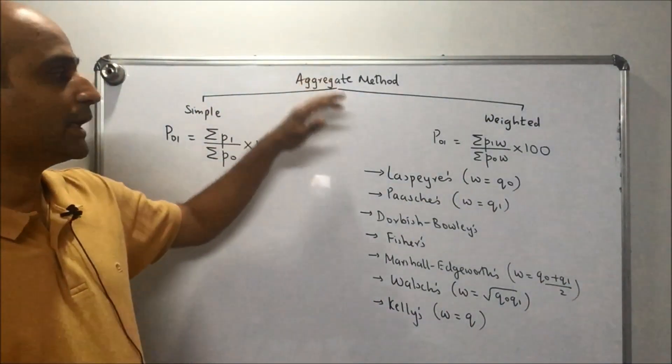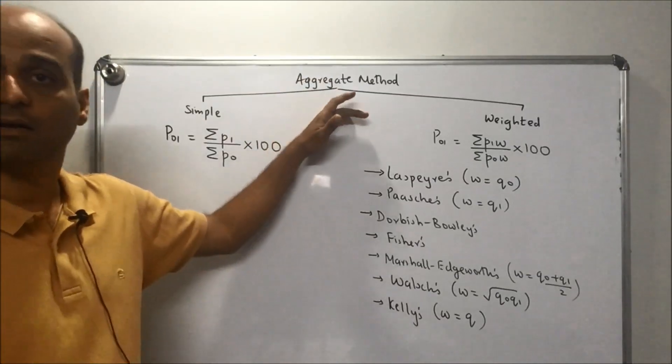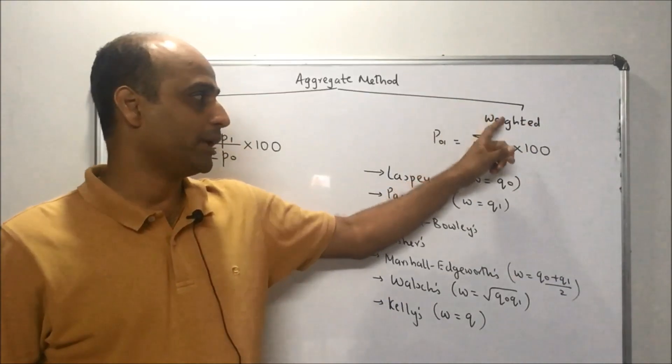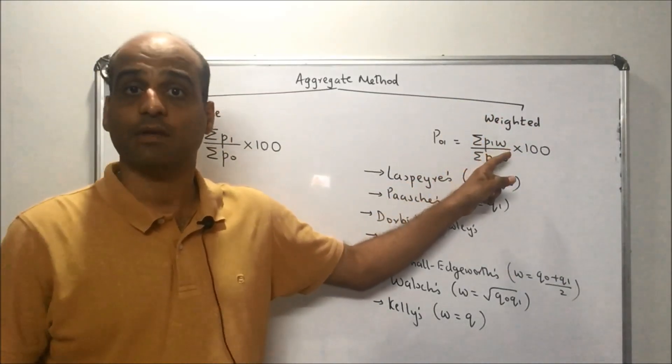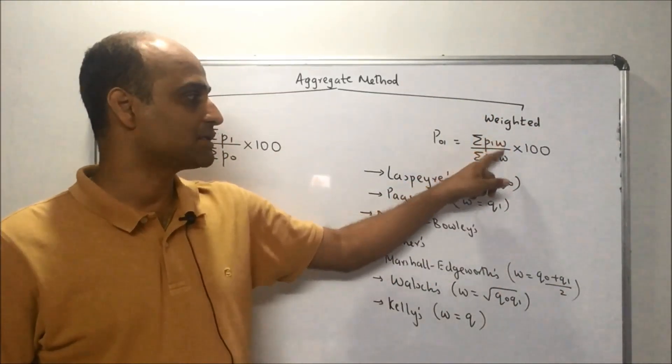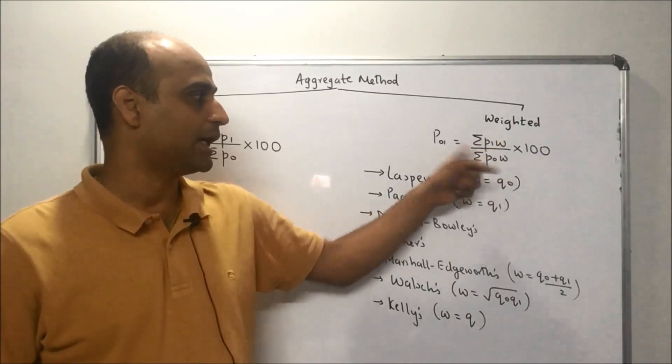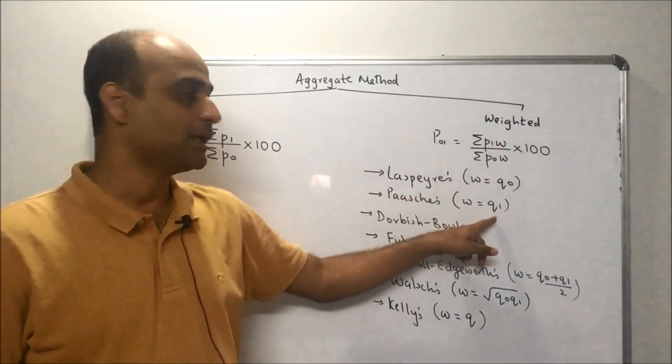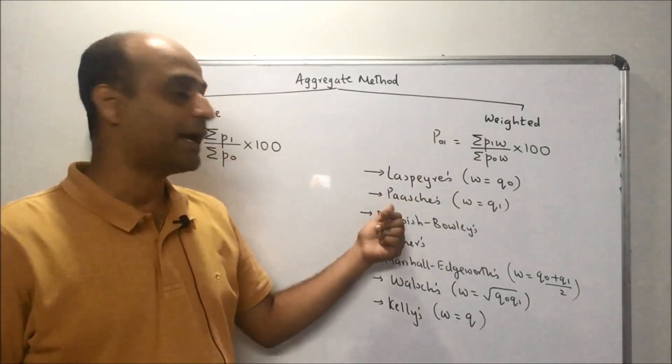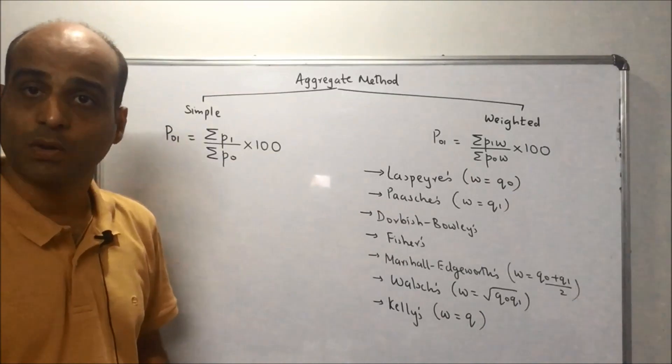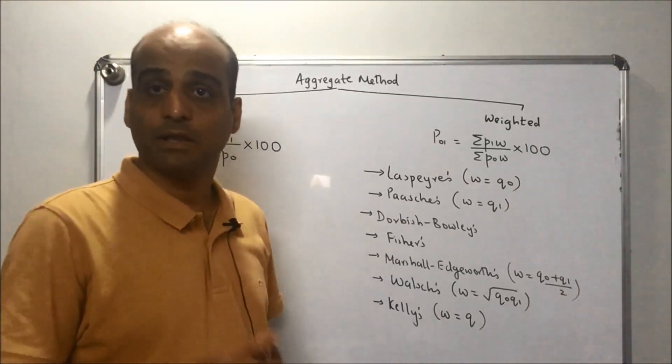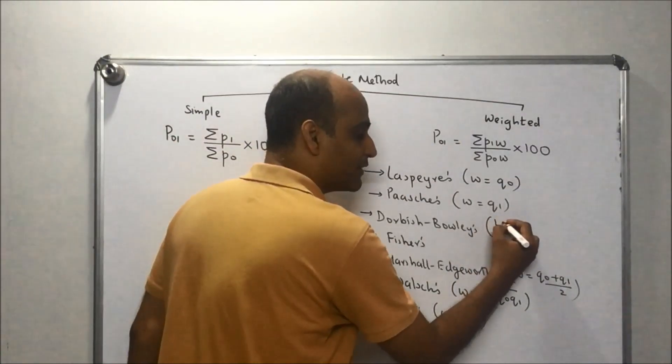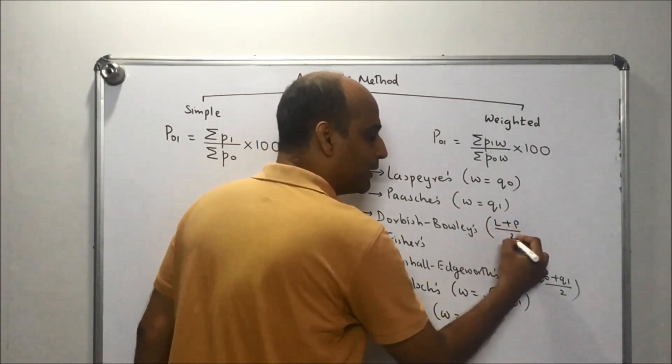This is how you construct index numbers under aggregate method. You have simple and weighted. In weighted, if you keep changing the weights, you get different indices. If I replace W by Q₀, I get Laspeyres index. If I replace W by Q₁, I get Paasche's index. Dorbush-Bowley's is the arithmetic mean of Laspeyres and Paasche's indices, so it's the average of Laspeyres and Paasche's.